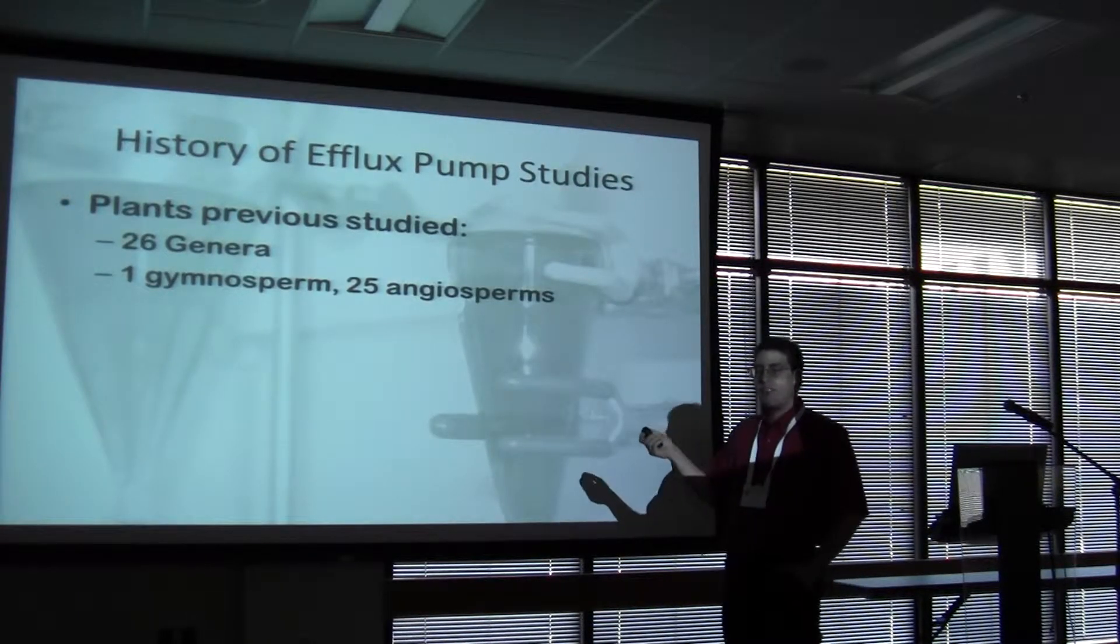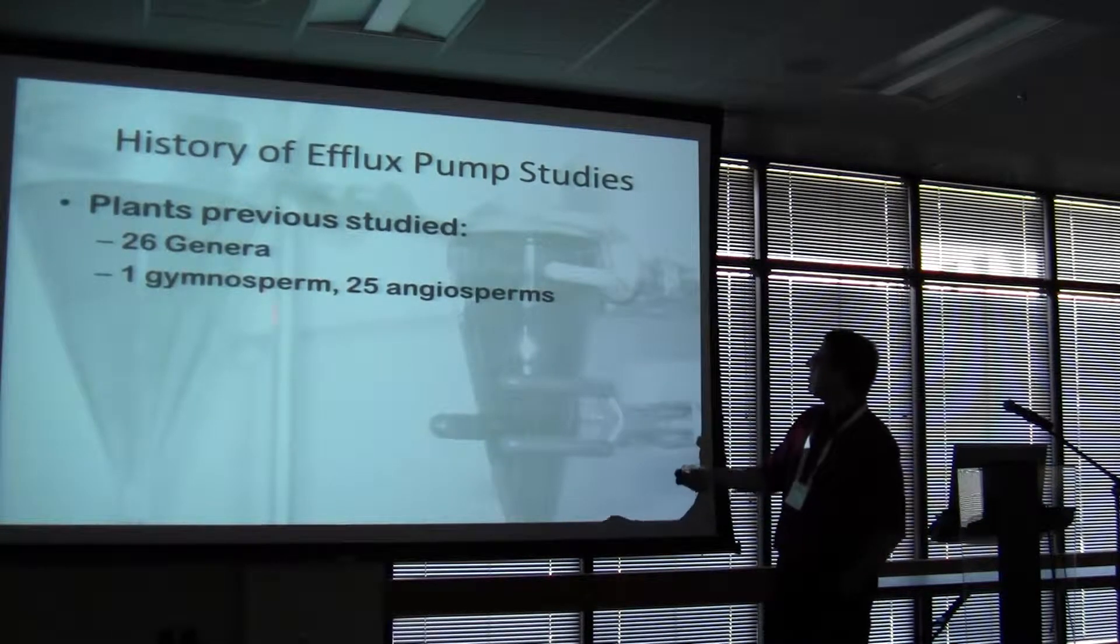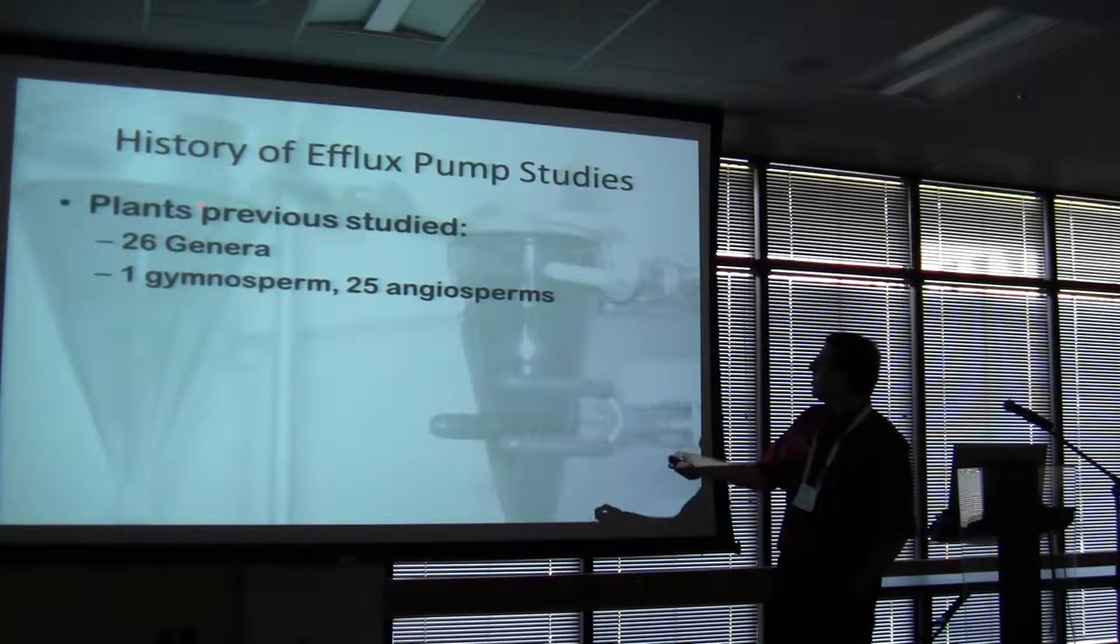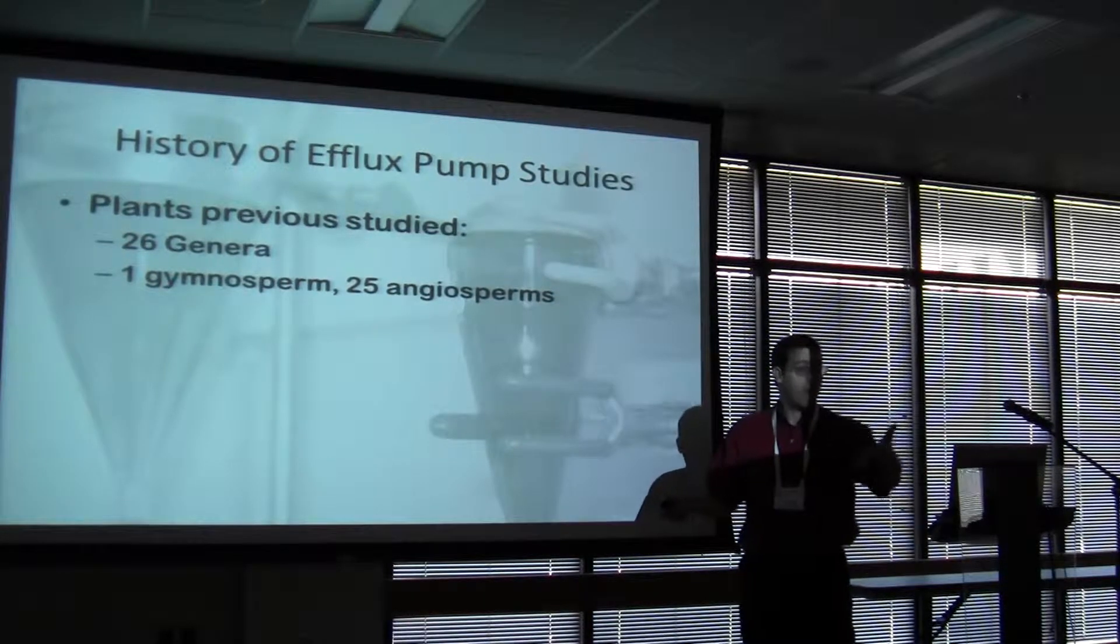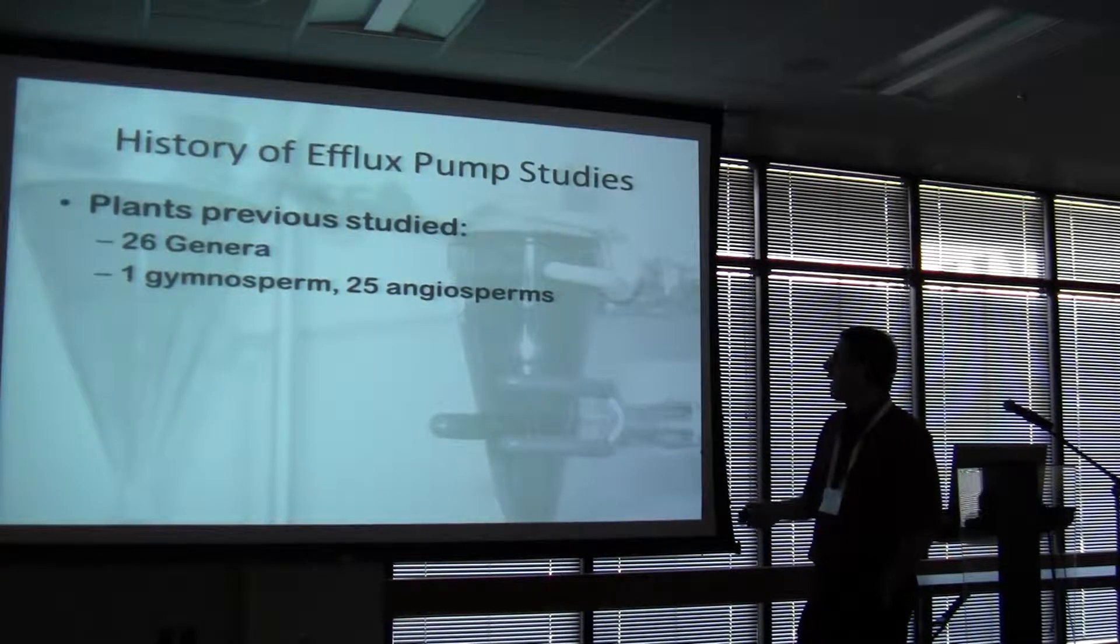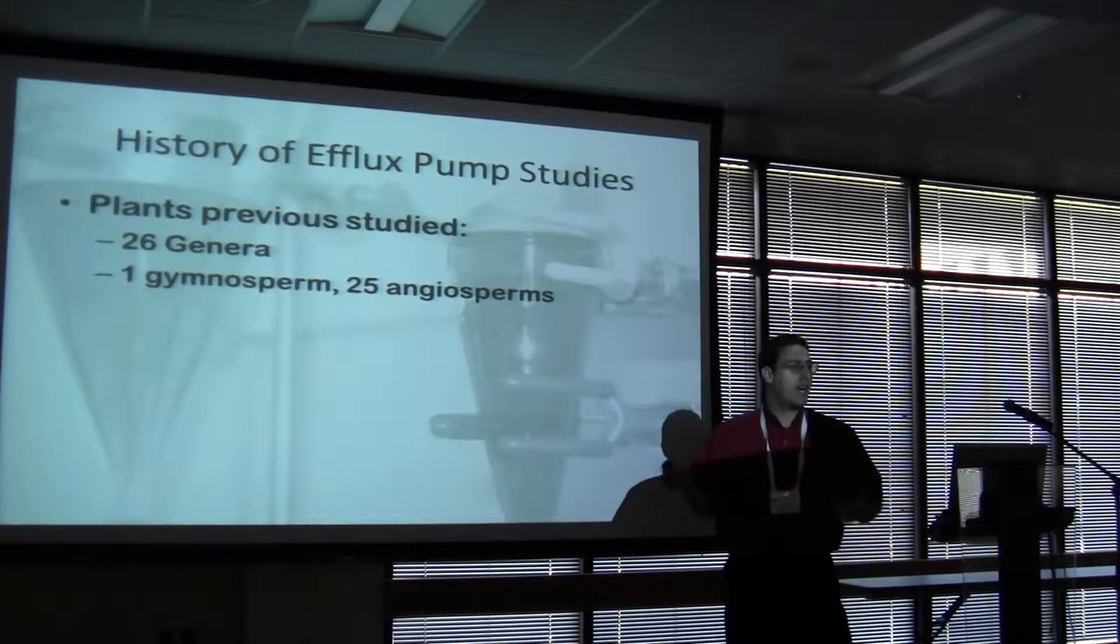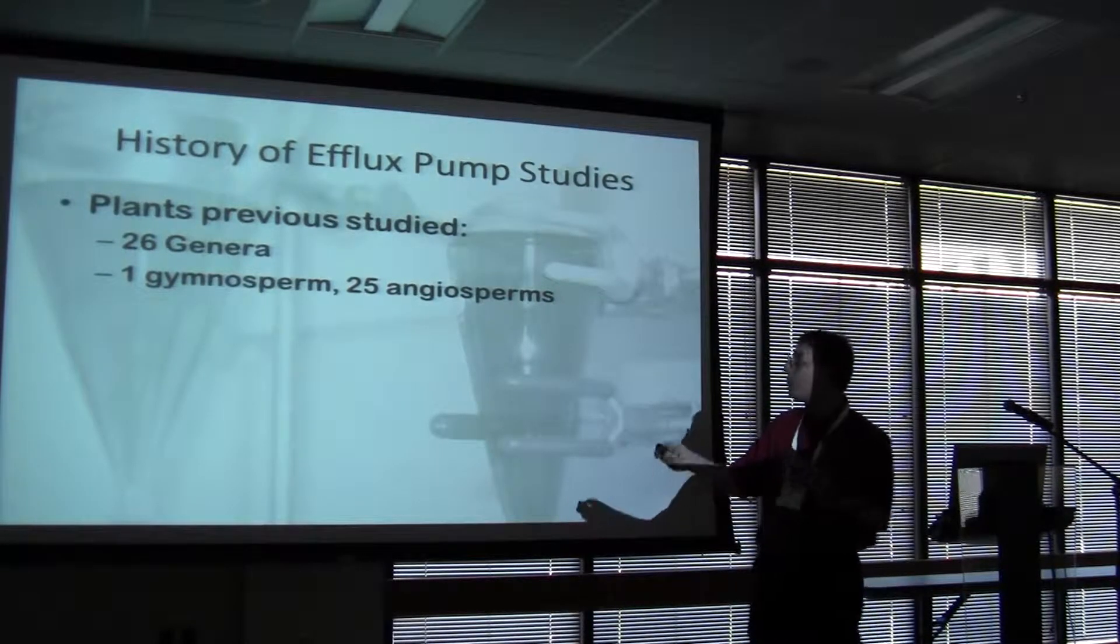The history of this, this is just a literature review in two bullet points. There have been a number of studies on this activity. 26 genera have been studied that have been shown to be positive for this. One gymnosperm, 25 angiosperms, and not done in a way that you can provide any taxonomic context to the prevalence of this activity, which is what I want to do.